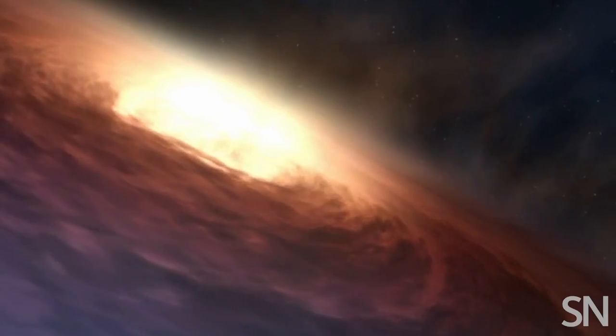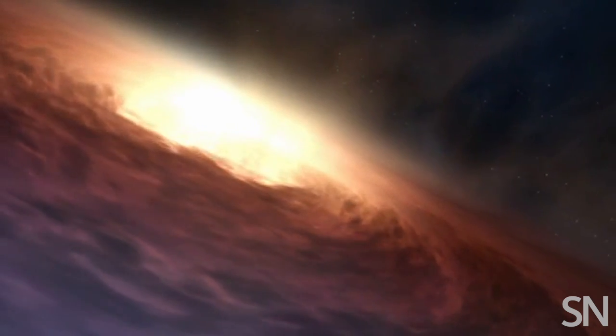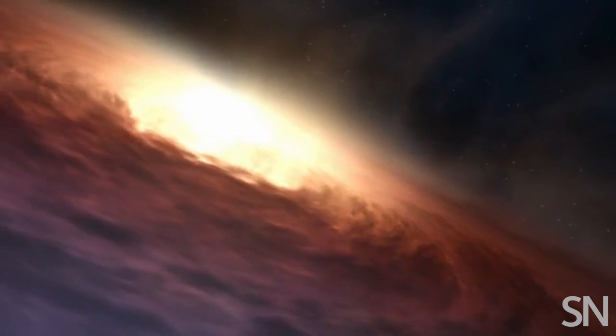They wrap huge amounts of gas and charged plasma around them. And as that stuff is trying to fall into the black hole, it can't all go in at once. So it orbits super fast, and the friction in that fast orbiting keeps it white hot.